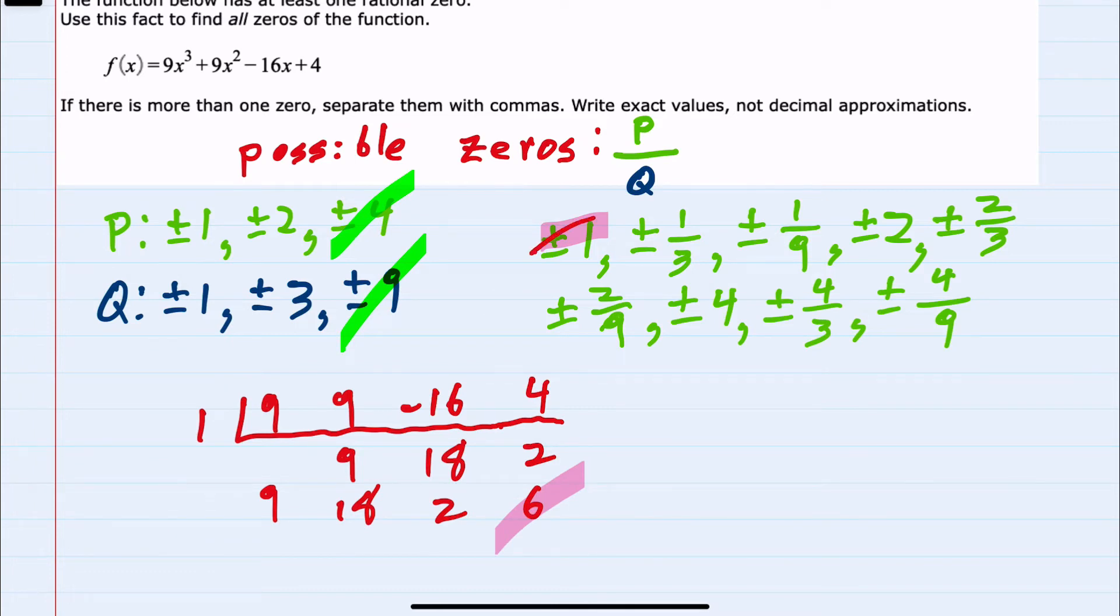So I'm going to cross off positive 1. But then we would also need to test negative 1. Negative 1 times 9 is negative 9. Adding gives us 0. Negative 1 times 0 is 0. Adding gives us negative 16. Negative 16 times negative 1 gives us positive 16. And again, we get a remainder, so negative 1 is not a solution either.